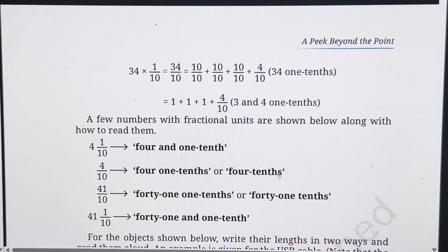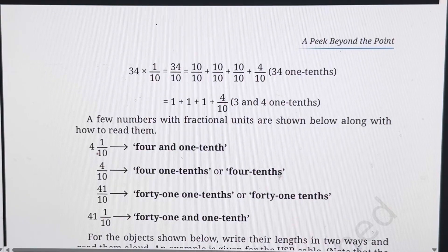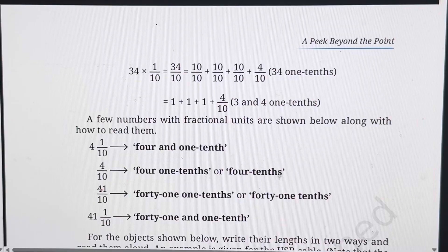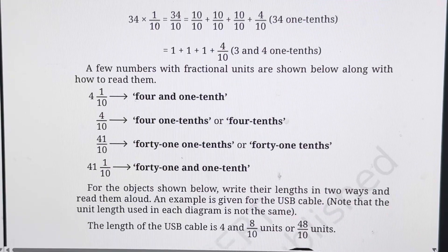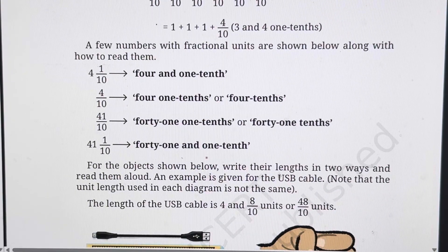A few numbers with fractional units are shown below along with how to read them. If it is written as 4 whole 1 upon 10, it is read as 4 and 1 tenth. If it is just 4 upon 10, that is 4 tenths. The third number, 41 upon 10, means 41 times 1 tenth, or 41 tenths. And the last one is 41 whole 1 upon 10, which is read as 41 and 1 tenth.